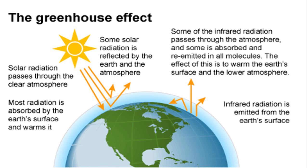A major human cause is the use of fossil fuels as a main source of energy. Global warming occurs when carbon dioxide and other air pollutants and greenhouse gases collect in the atmosphere and absorb sunlight and solar radiation that has bounced off the earth's surface — this is known as the greenhouse effect. The largest global warming contributors by country are China first and the United States second.